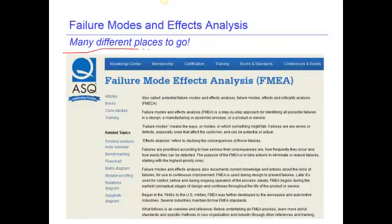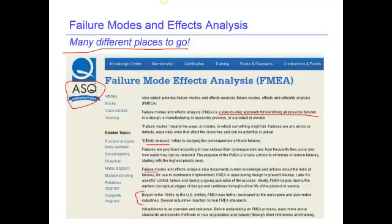There are many resources for failure modes and effect analysis. ASQ has a considerable amount of information, and the ASQ website is very informative — it describes FMEA as a step-by-step approach to identifying all possible failures and defines various parameters. This methodology was begun back in the 1940s, so it has been around for quite a long time. It's hard to imagine that a company should not have a rigorous FMEA process in place, and one goal of this course is to introduce FMEA so you're familiar with it as part of the design process.